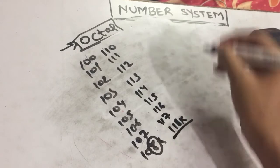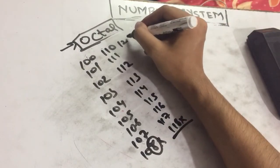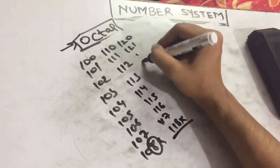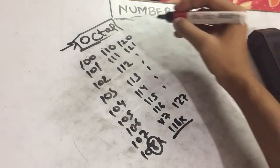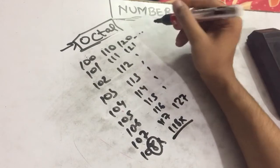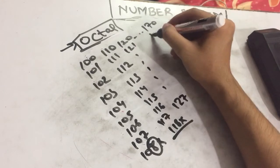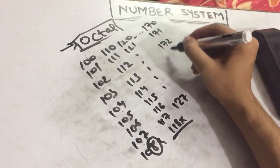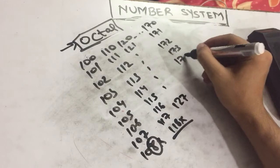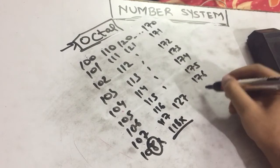It will be 110, 111, 112, 113, 114, 115, 116, 117. Again we can't write 118, so the next number will be 120.